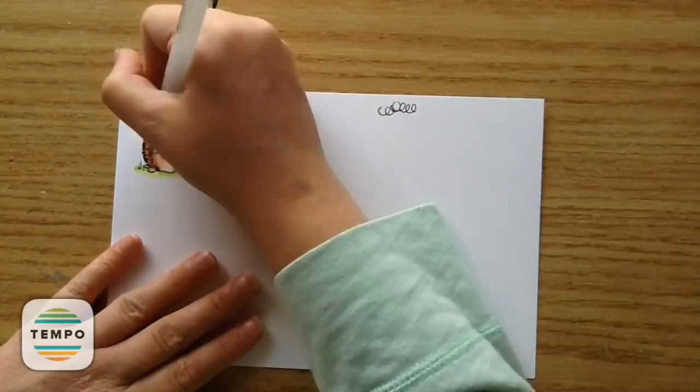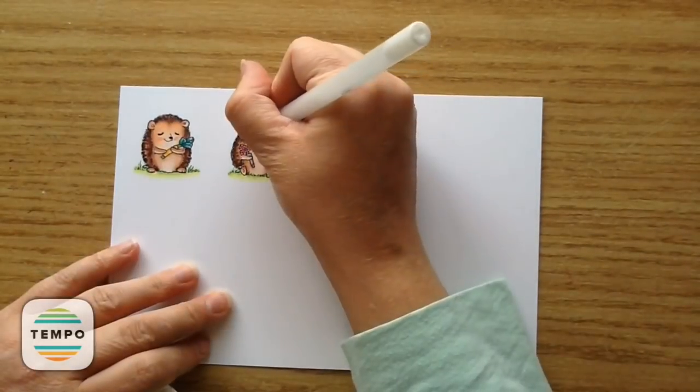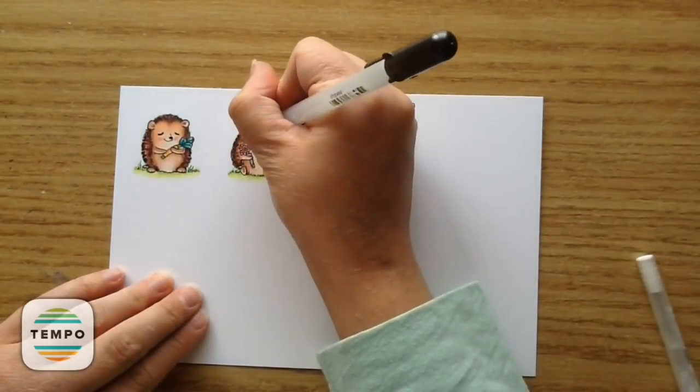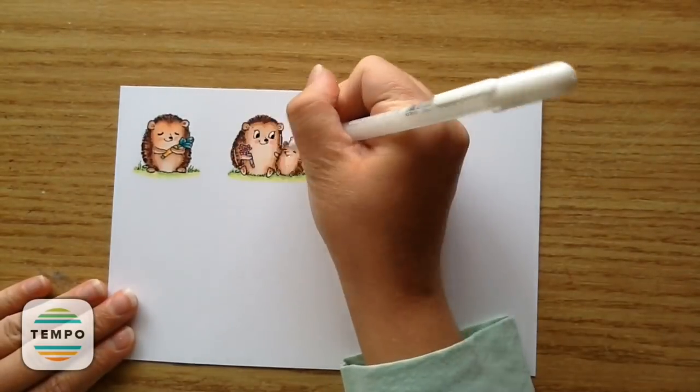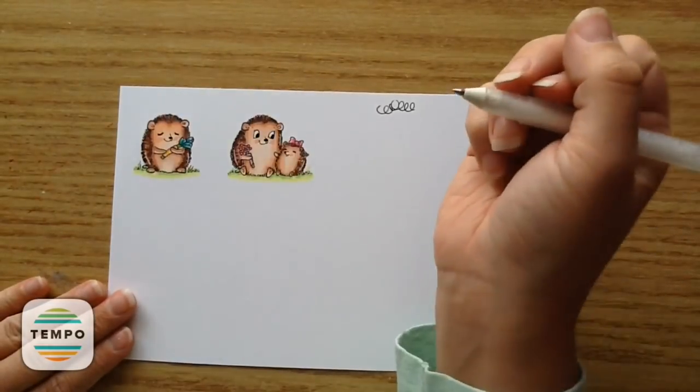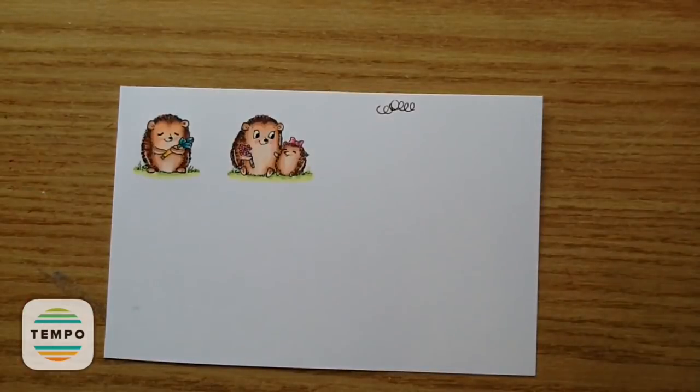These little cuties were so easy to color up. I love them so much. And then I took my black jelly pen just to do the little eyes. And then I took my white jelly pen and I put three little dots on each of the hedgehog's cheeks. And then I put two little dots on the baby one. And then I also used the black jelly pen for the noses of all the little hedgehogs.